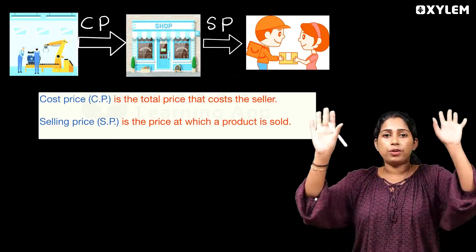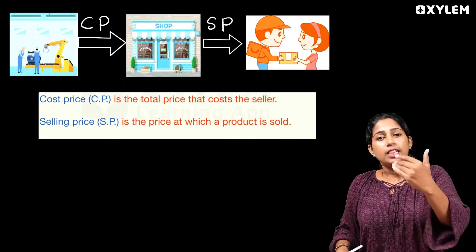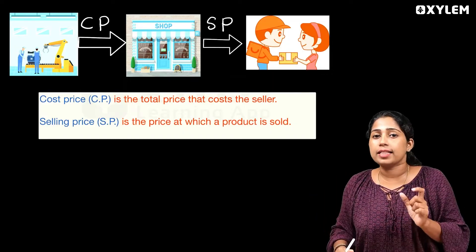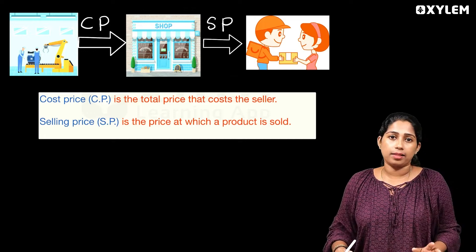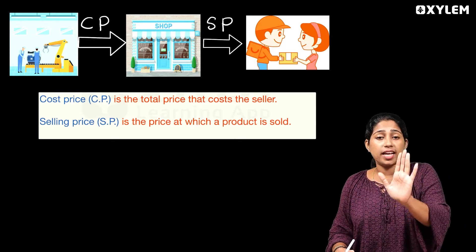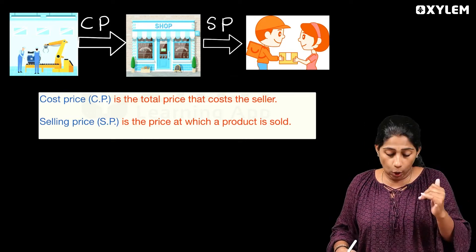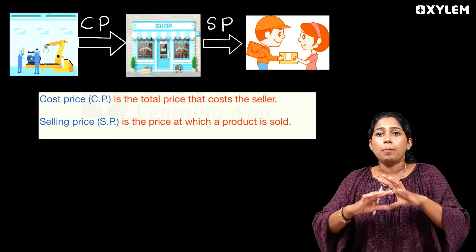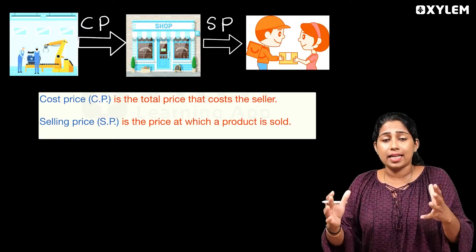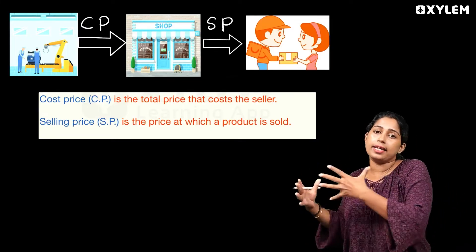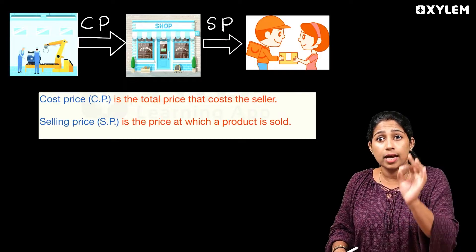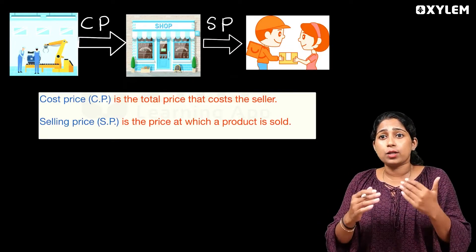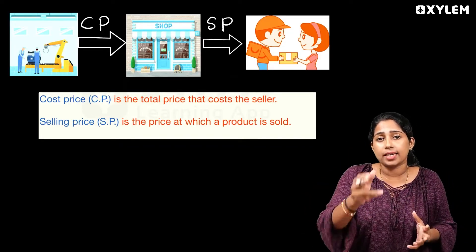When you buy a dress from a shop, the price at which you buy it is called the cost price. The price at which the seller sells it to you is the selling price. The selling price is the price at which the product is sold.